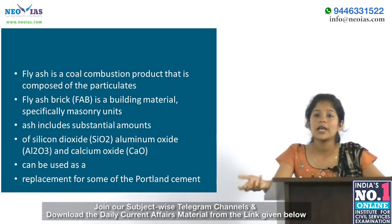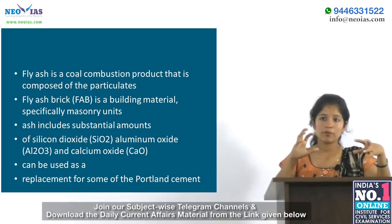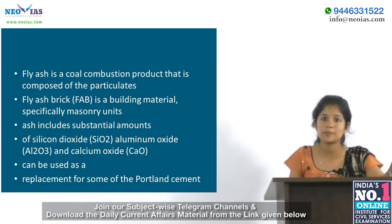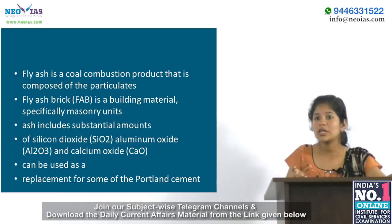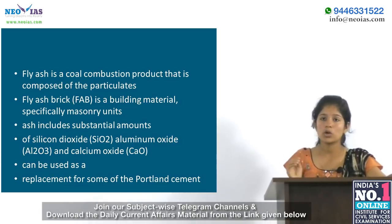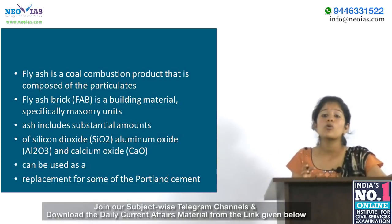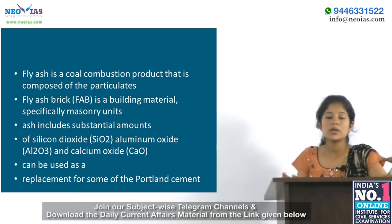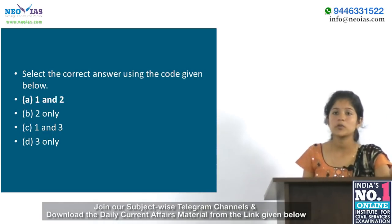Fly ash, or flue ash, is a coal combustion product composed of fine particles of burned fuel driven out of coal-fired boilers together with flue gases. It is used as a building material, specifically in masonry. All fly ash includes substantial amounts of silicon dioxide, aluminum oxide and calcium oxide — not silicon dioxide and calcium oxide only, as the third statement claimed. Fly ash can be used as a replacement for some of the cementitious content of concrete, making statements 1 and 2 correct, while statement 3 is wrong as fly ash is indeed a pollutant.